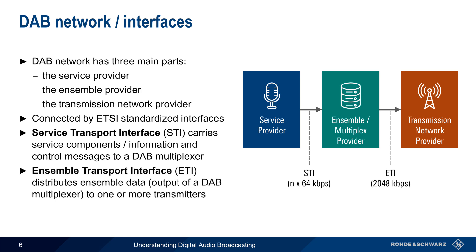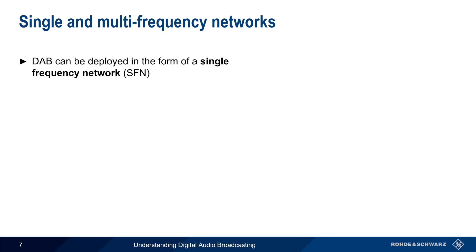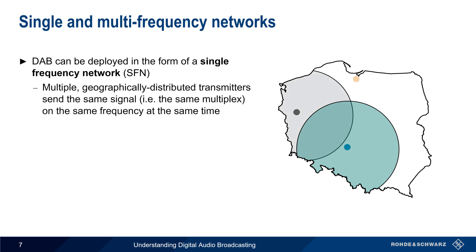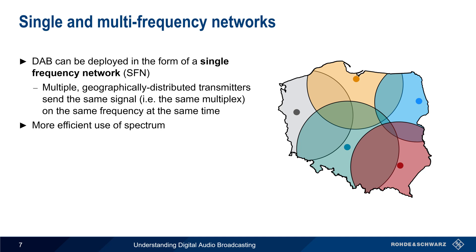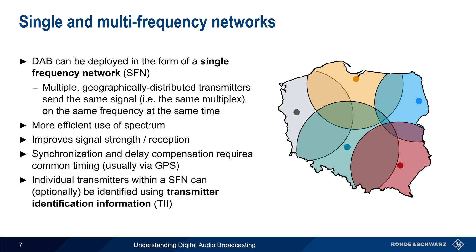The output of this multiplexer is carried over the Ensemble Transport Interface, or ETI, to one or more transmitters. DAB can be deployed in the form of a single frequency network, where multiple transmitters send the same multiplex on the same frequency at the same time, allowing for more efficient spectrum utilization and improved overall signal reception. Single frequency networks require synchronization to ensure that the overall delay over the ETI interface is the same between the multiplexer and each transmission site — GPS is normally used for this task. Individual transmitters within a single frequency network can optionally be identified using TII, or Transmitter Identification Information.